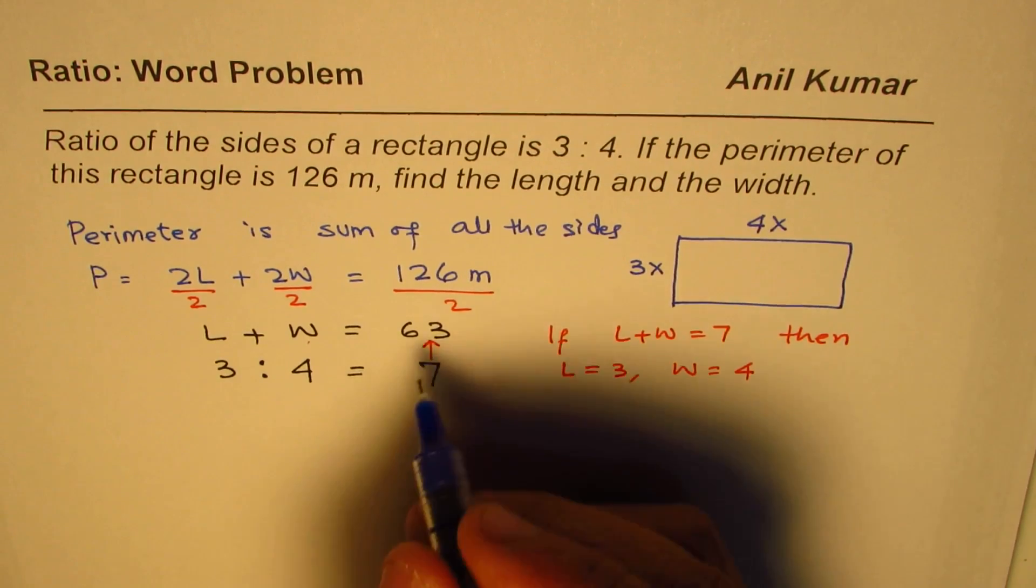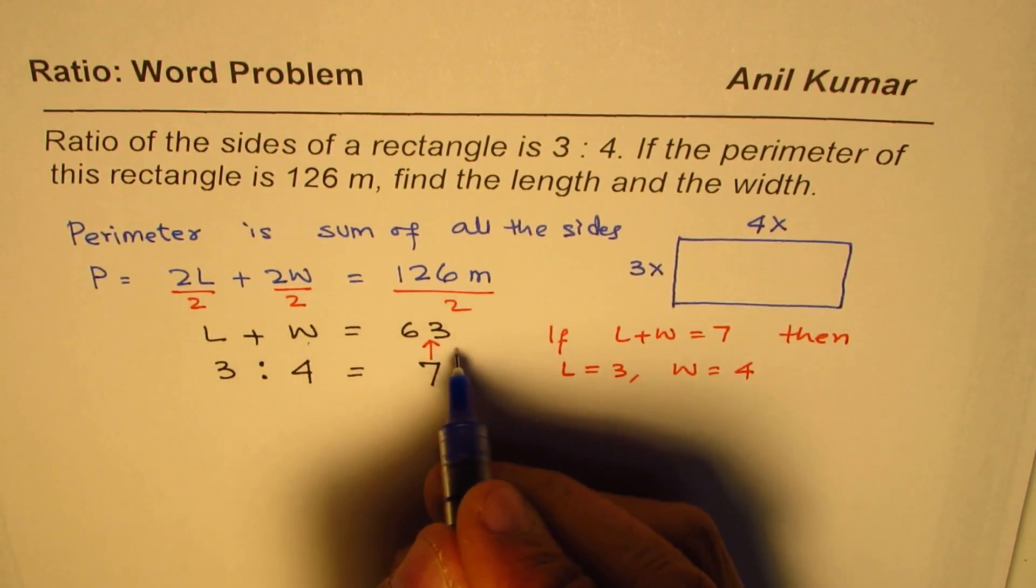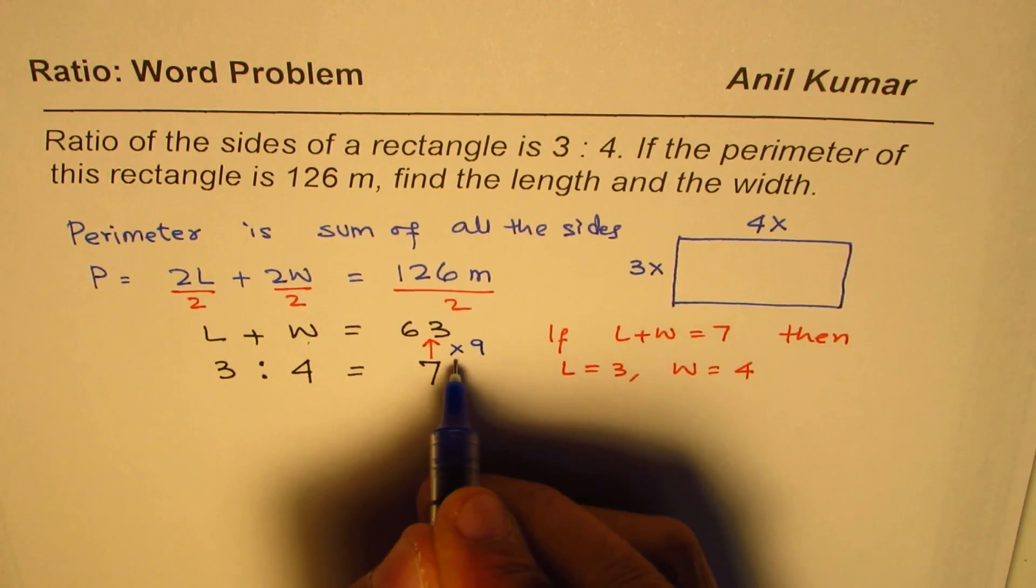Clearly, 7 times 9 is 63, right? So to get this, it is times 9. Do you get an idea?